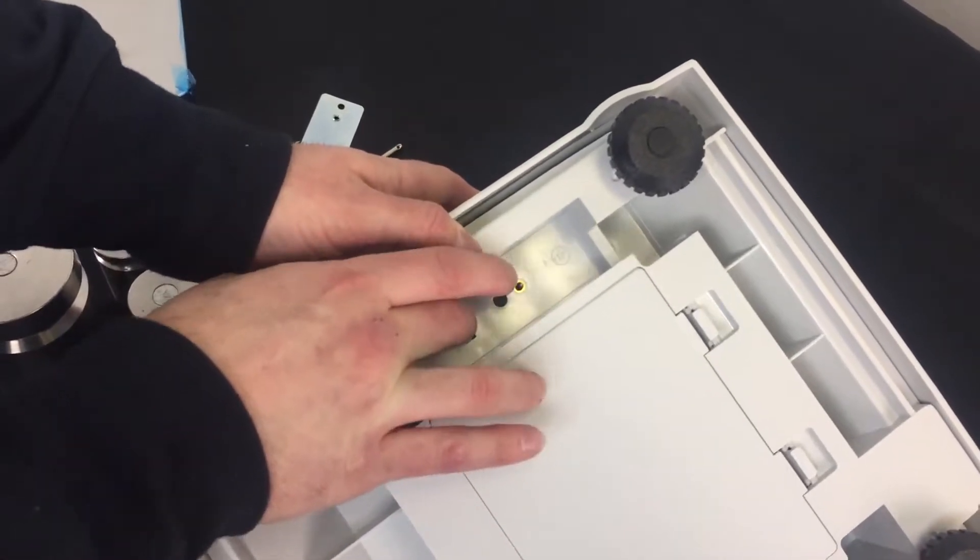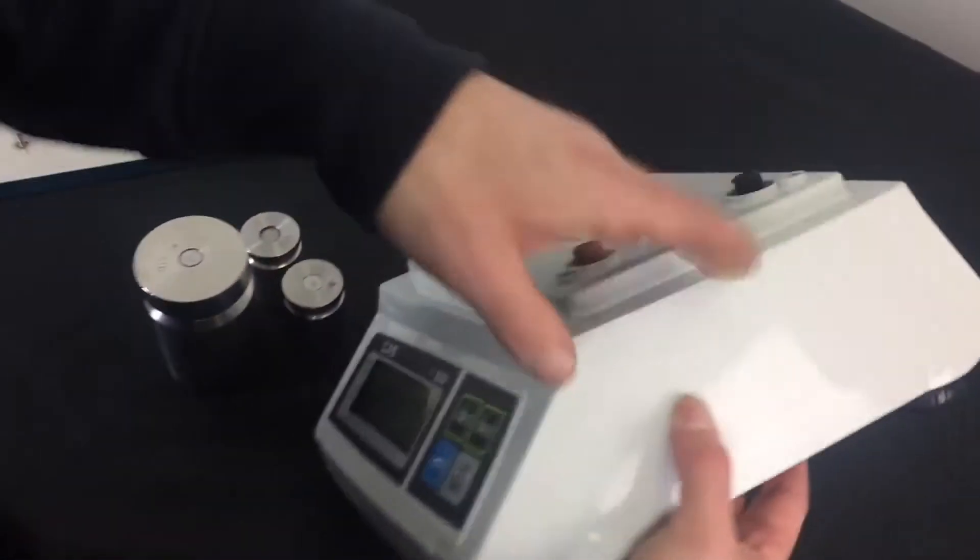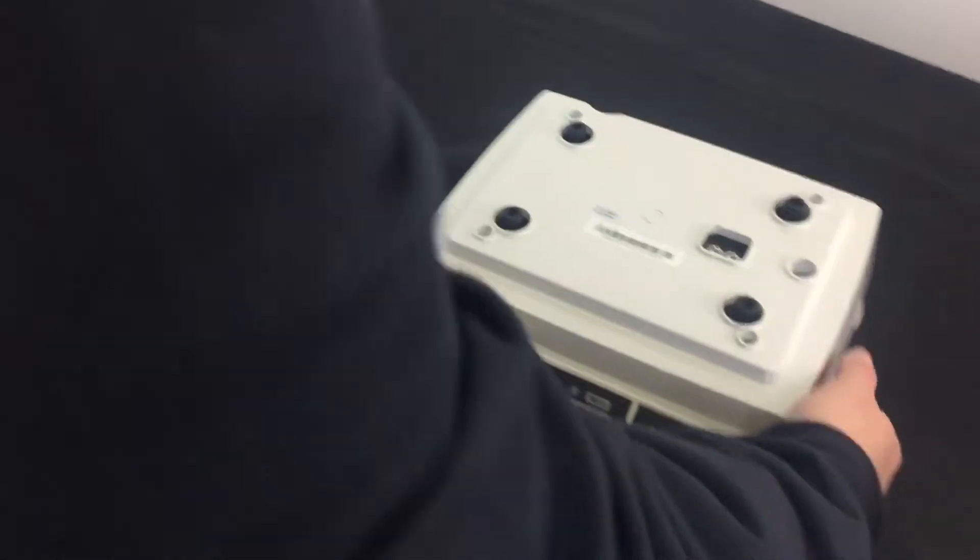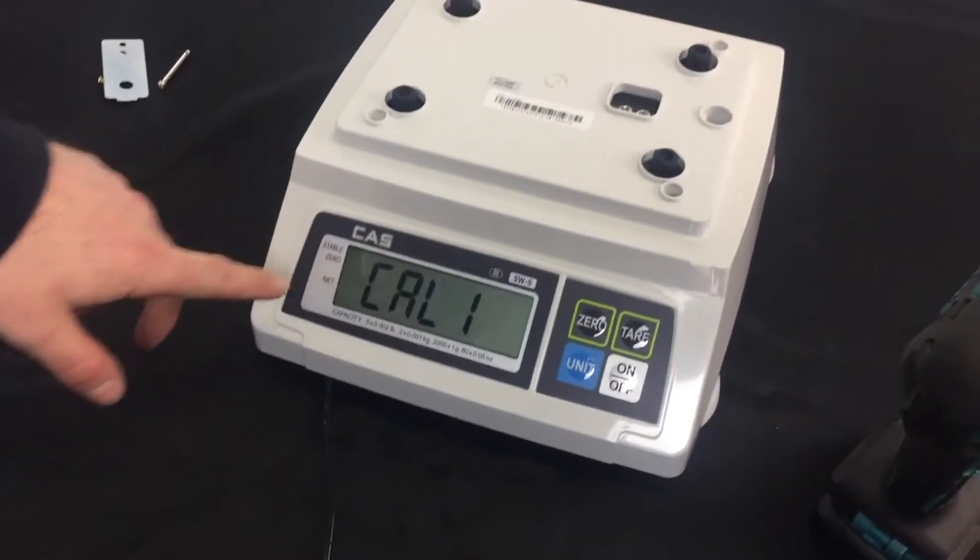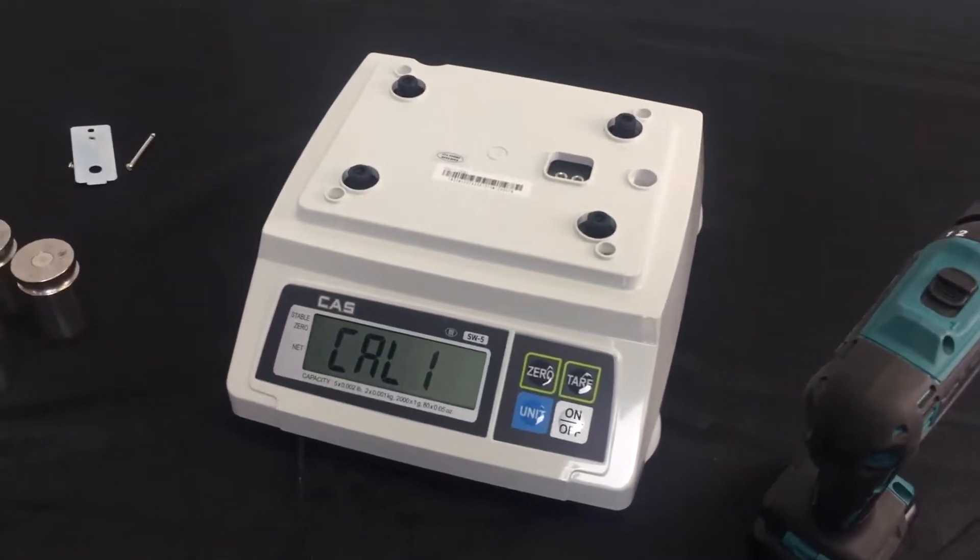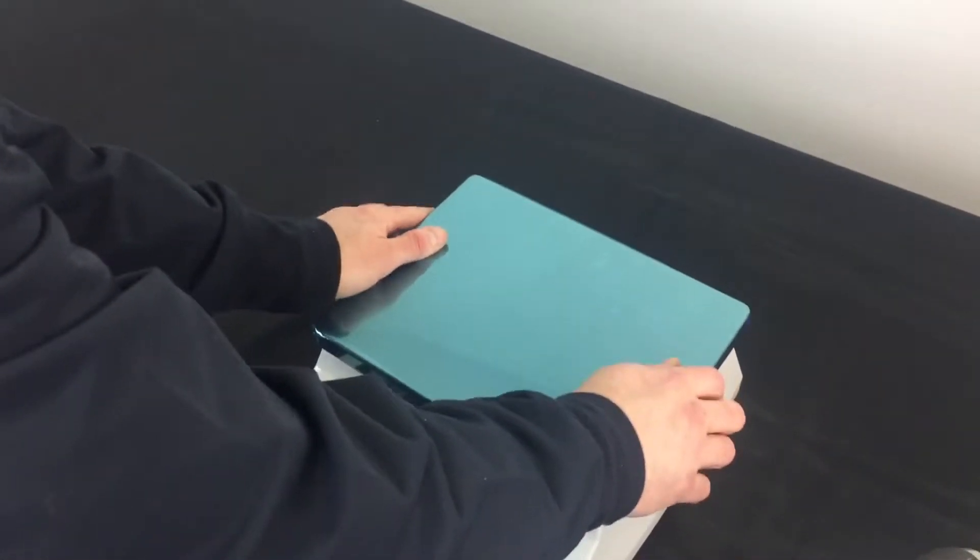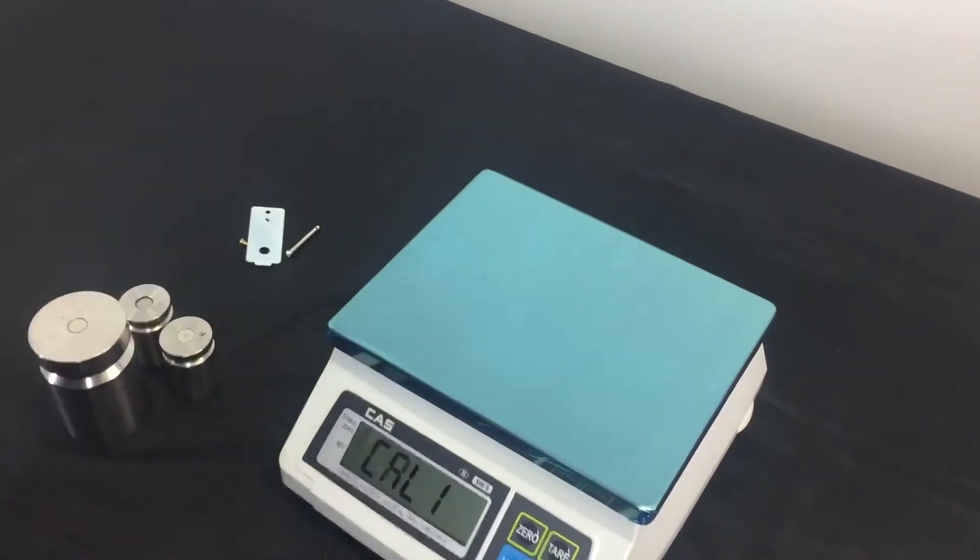So, what we're going to want to do is just hold this in, flip this around while turning the scale on. You'll see one on the display and then cal one. Now, we're ready to calibrate, so let's put our platter back on the scale. Get it in there. Secure.